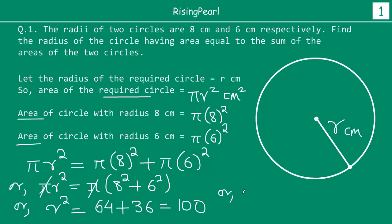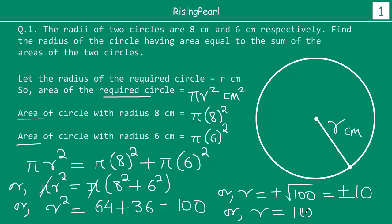Pi and pi cancel out. We have r² = 8² + 6², which is 64 + 36, equal to 100. Taking square root on both sides, we have r = ±√100 = ±10. Now obviously r is a radius — it cannot be a negative number — so r equals 10 centimeters. That means the bigger circle whose area is equal to the sum of the areas of the first two circles must have a radius of 10 centimeters.